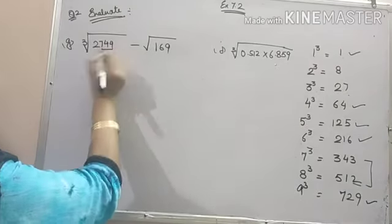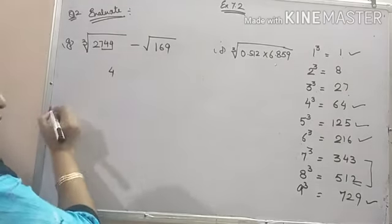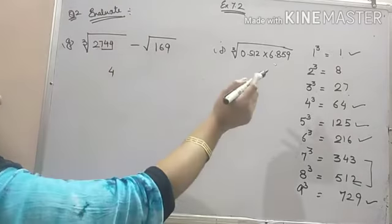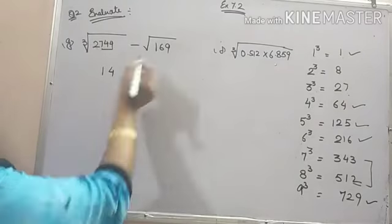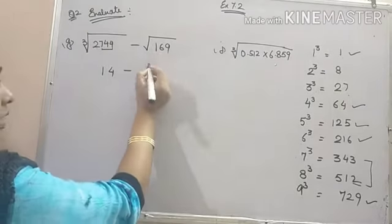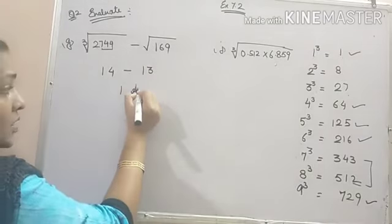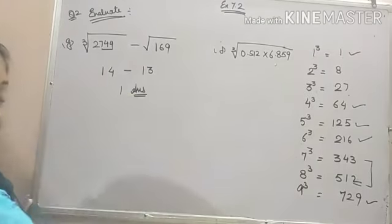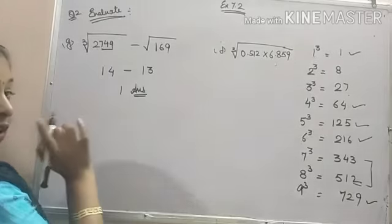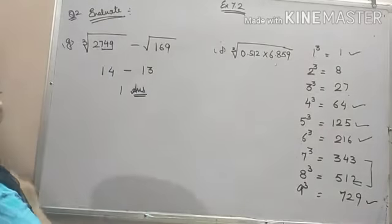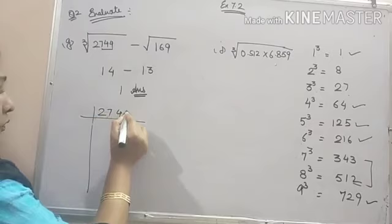Let me try. This is 4 is the last digit. So here 4 will come. 2 is greater than the cube of 1. So here 14 will come. And minus, it is the square of 13. 14 minus 13, 1 is your answer. This is the easiest way. But you can apply this only when you are sure that it is a perfect cube.